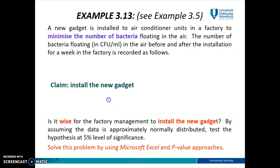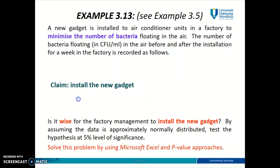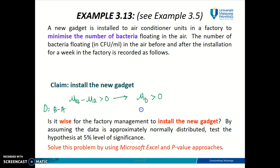If the new gadget does minimize the number of bacteria, then the number of bacteria after installation should be less — fewer — compared to before installation. So before should be greater than after, which we can write as mu_B minus mu_A greater than zero, giving us mu_d greater than zero. If you choose to find differences by doing before minus after, you get mu_d greater than zero. Since this is dependent samples, we change the notation to mu_d. This is our claim.